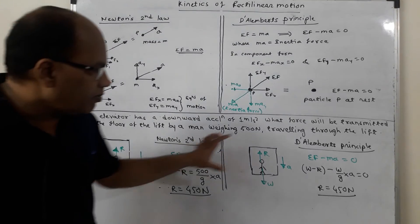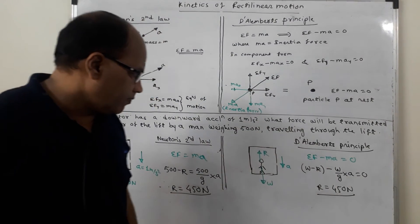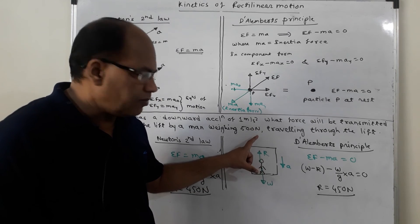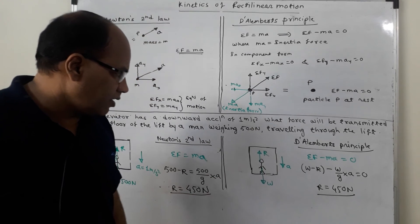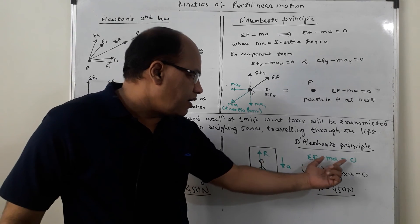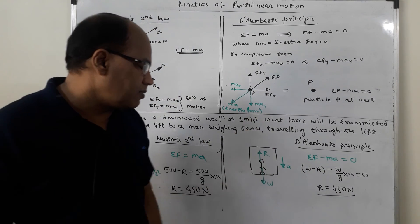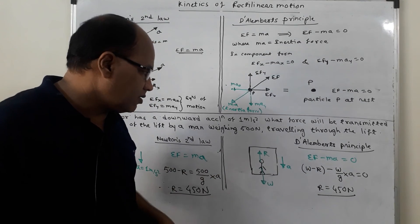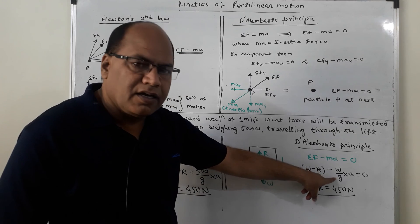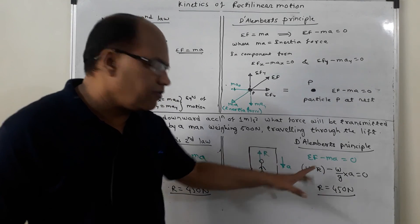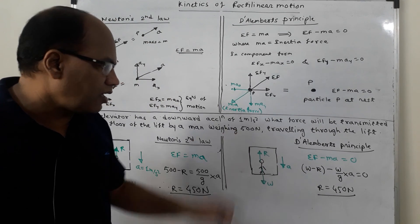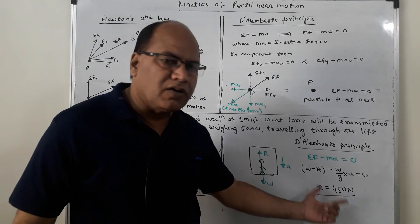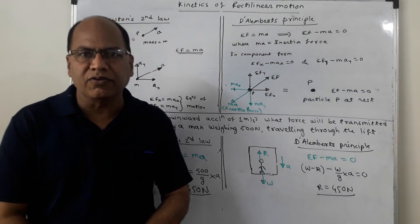Now let us solve the same problem using D'Alembert's principle. The forces remain the same — weight acting downward and normal reaction R acting upward, with acceleration A in the downward direction. Using ΣF − MA = 0: ΣF is W − R as before, and the inertia force MA is applied in the opposite direction to acceleration. So (W − R) − (W/g)·A = 0. Solving this, we get R = 450 Newton.